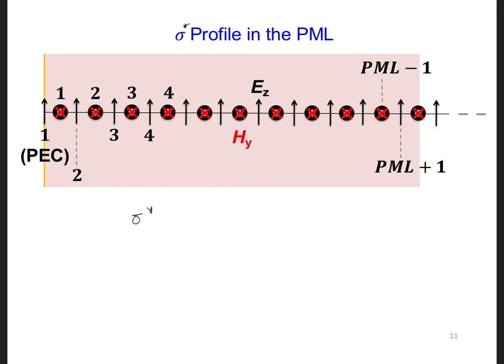Now what about sigma star? See if you can develop a loop to define the sigma star array to be used in the dA and the dB coefficients in the PML. Also define which HY indices we need to define sigma star in the PML.